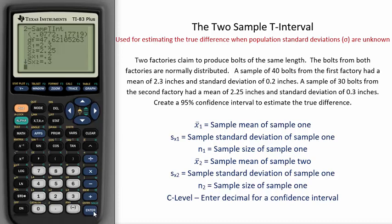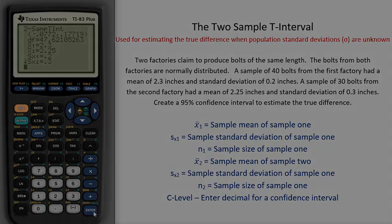Our interval goes both positive and negative, and because of this, we do not know for certain which factory has a higher mean. Since zero is contained in the interval, we are uncertain that there is a difference at all.